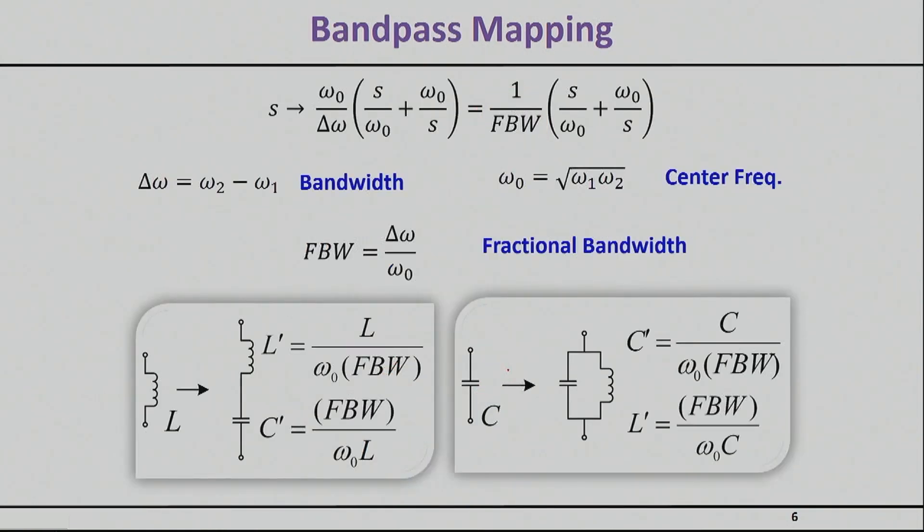Then there is the bandpass mapping, which is a little bit more common because most filters are bandpass or bandstop. And so again, I'm basically doing a frequency mapping from the S domain, again the omega domain, to this domain here. And this domain has two numbers that we should pay just a little bit of attention. One number is the omega 0. This is the center frequency of the filter. Usually, it's the square root of the geometric mean of the two, the high and the low frequencies of my bandpass. And then the delta omega, which is nothing else but the difference, or as is called, bandwidth.